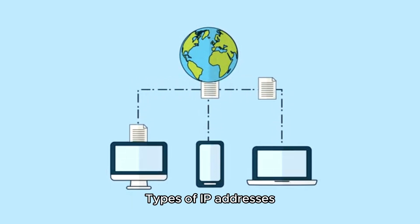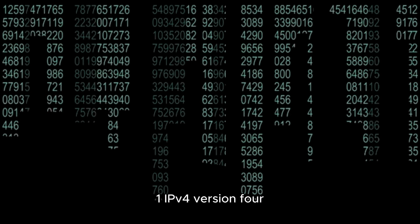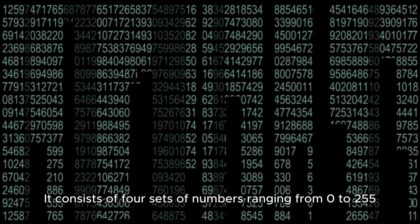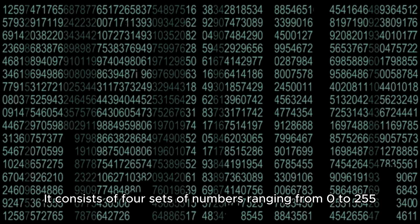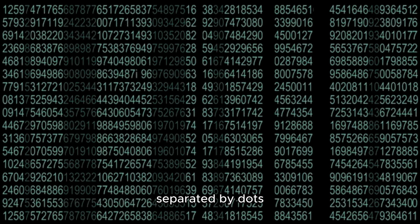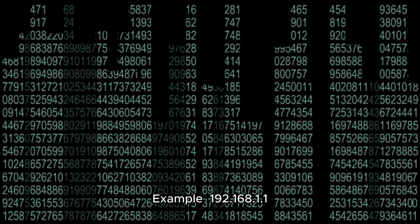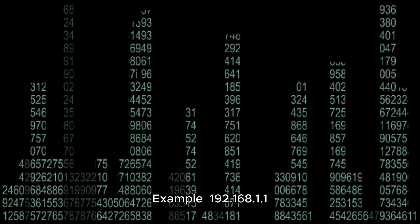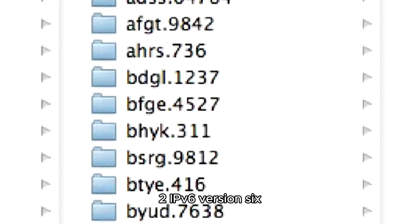Types of IP addresses. 1. IPv4 (version 4): It consists of four sets of numbers ranging from 0 to 255, separated by dots. Example: 192.168.1.1.